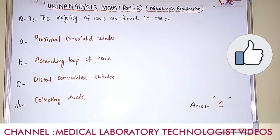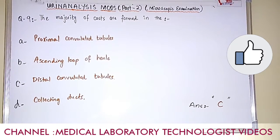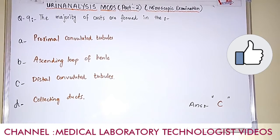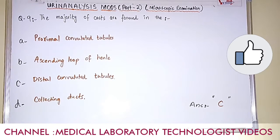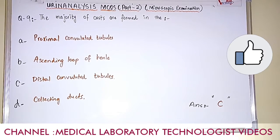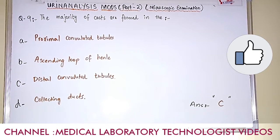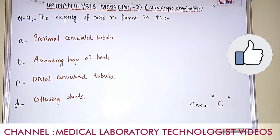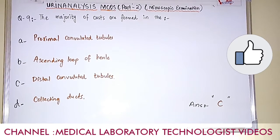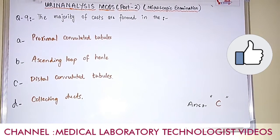Question number 9. The majority of casts are formed in. Option A: proximal convoluted tubules. Option B: ascending loop of Henle. Option C: distal convoluted tubules. Option D: collecting ducts. These are all parts of the nephron, the important functional unit of the kidney. The answer is option C, distal convoluted tubule.